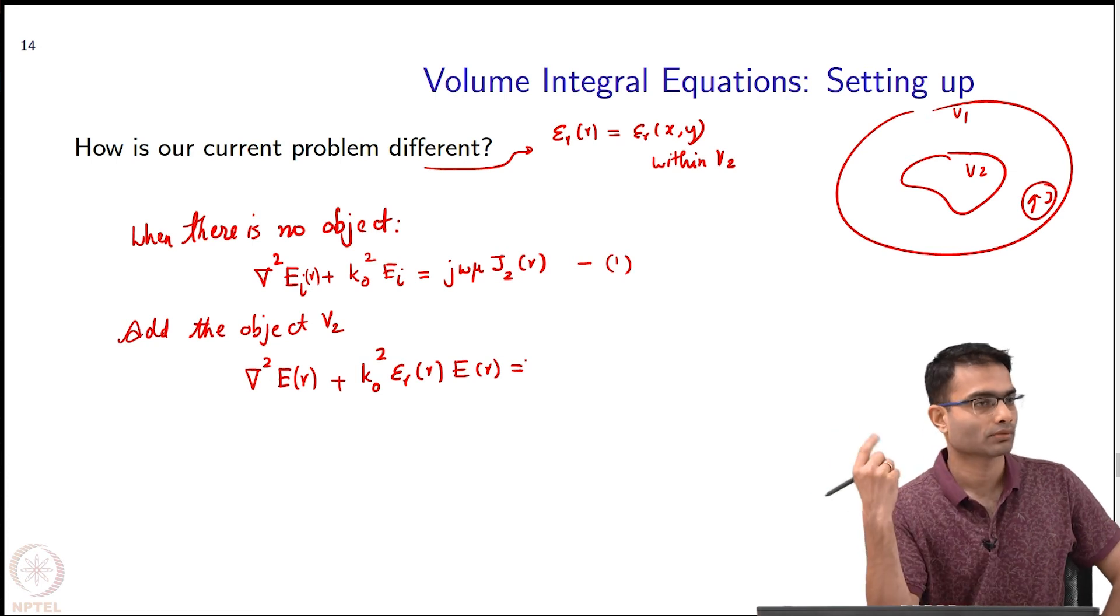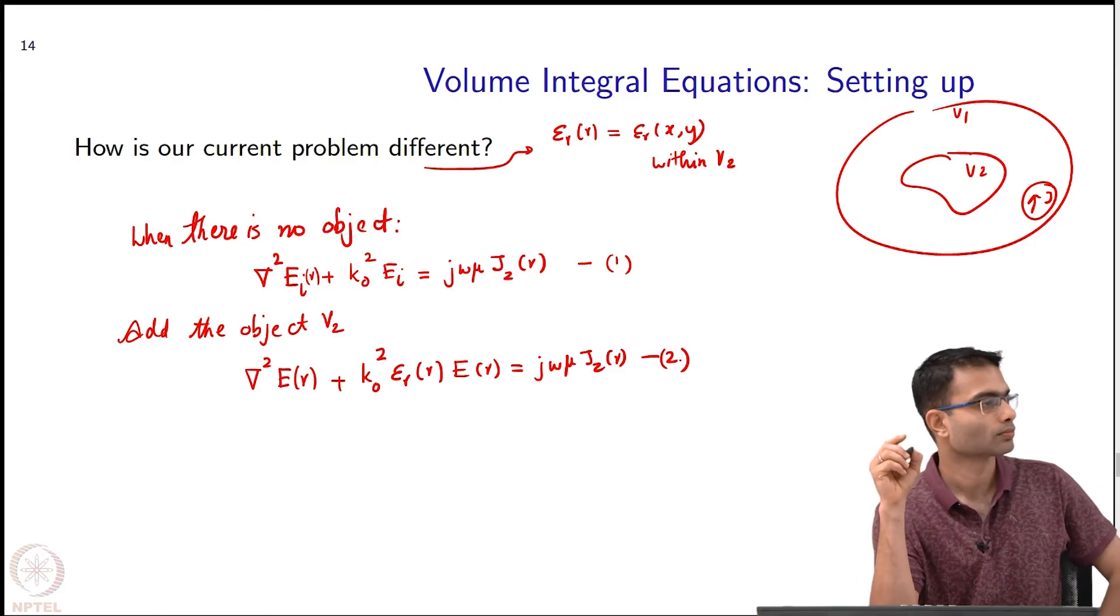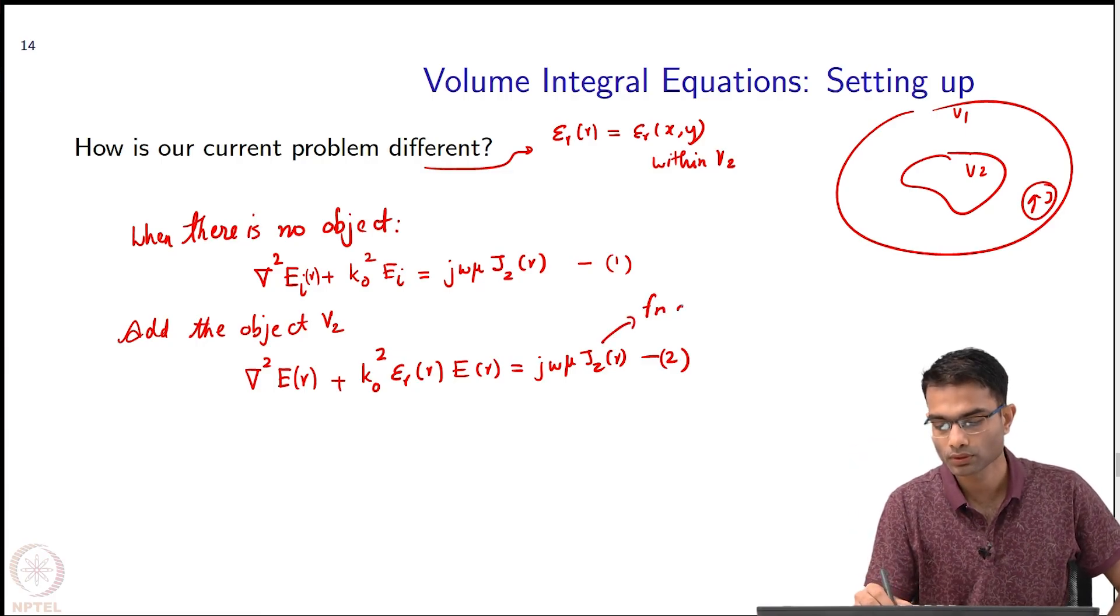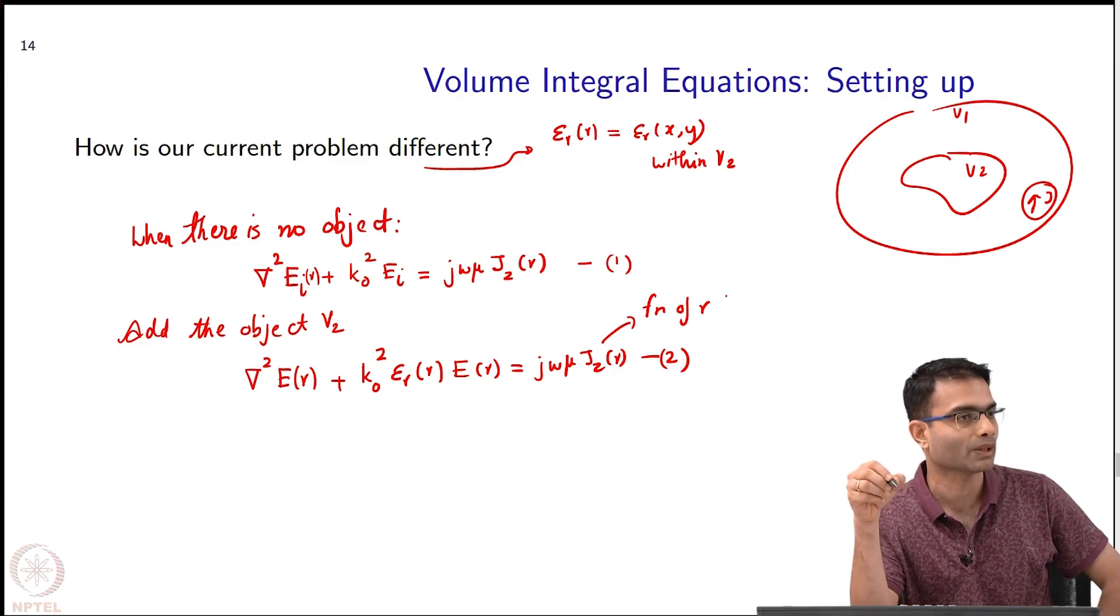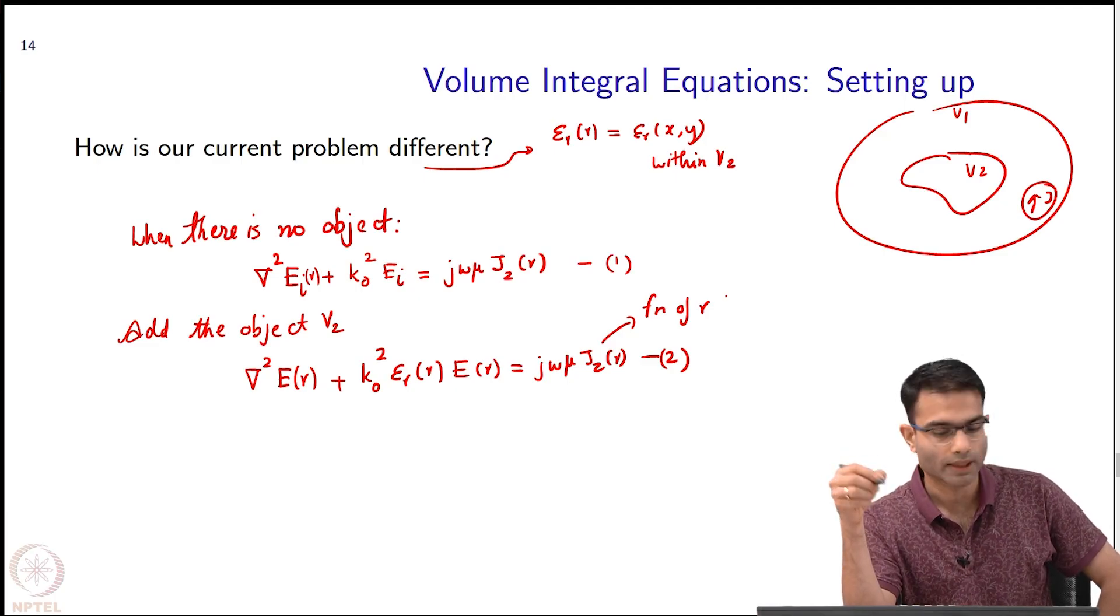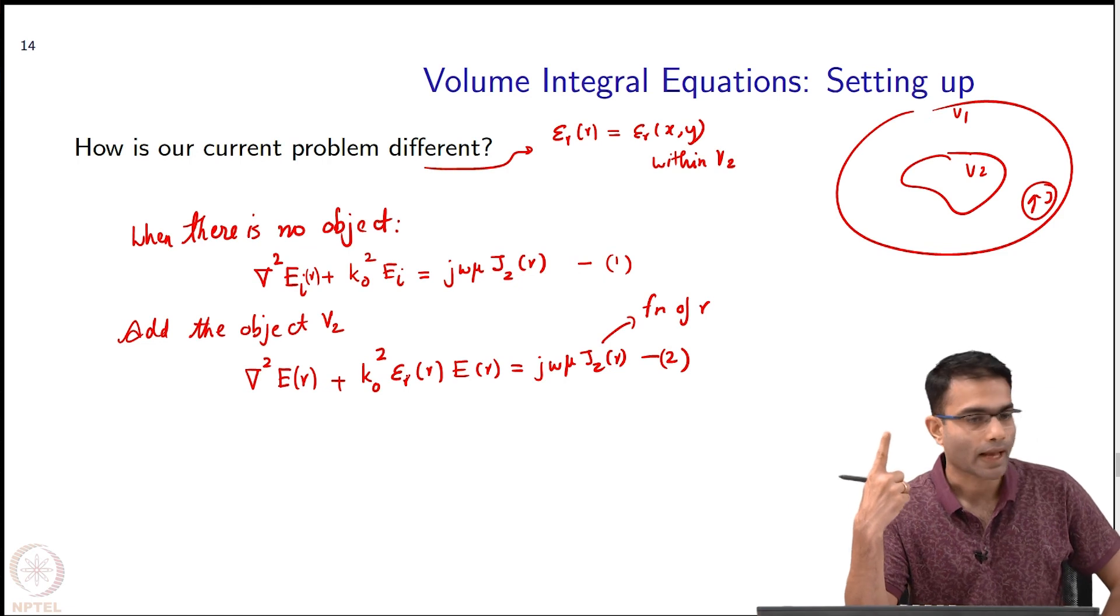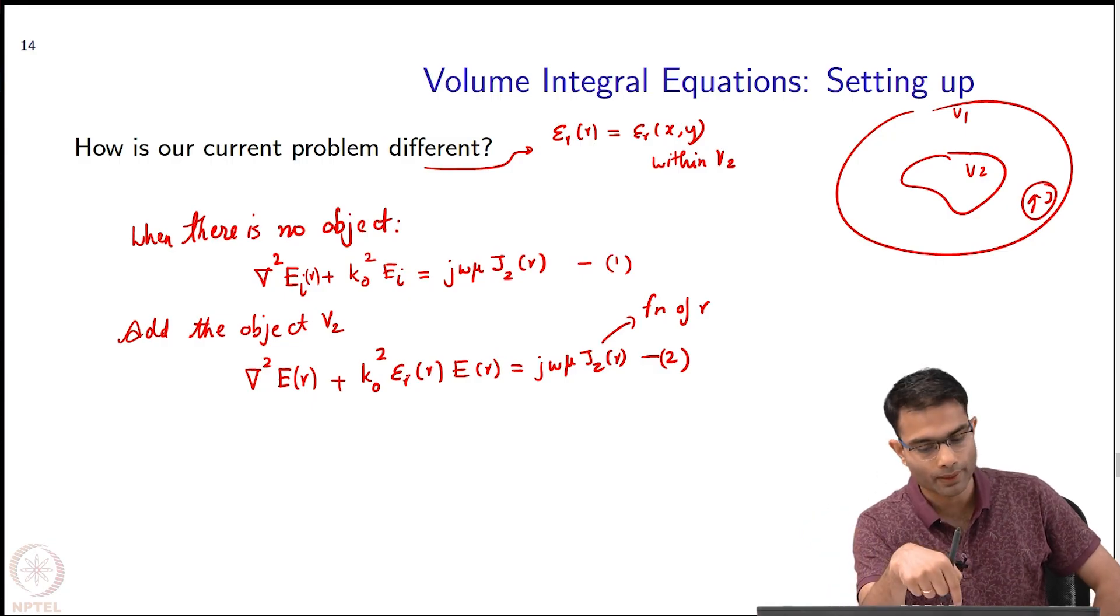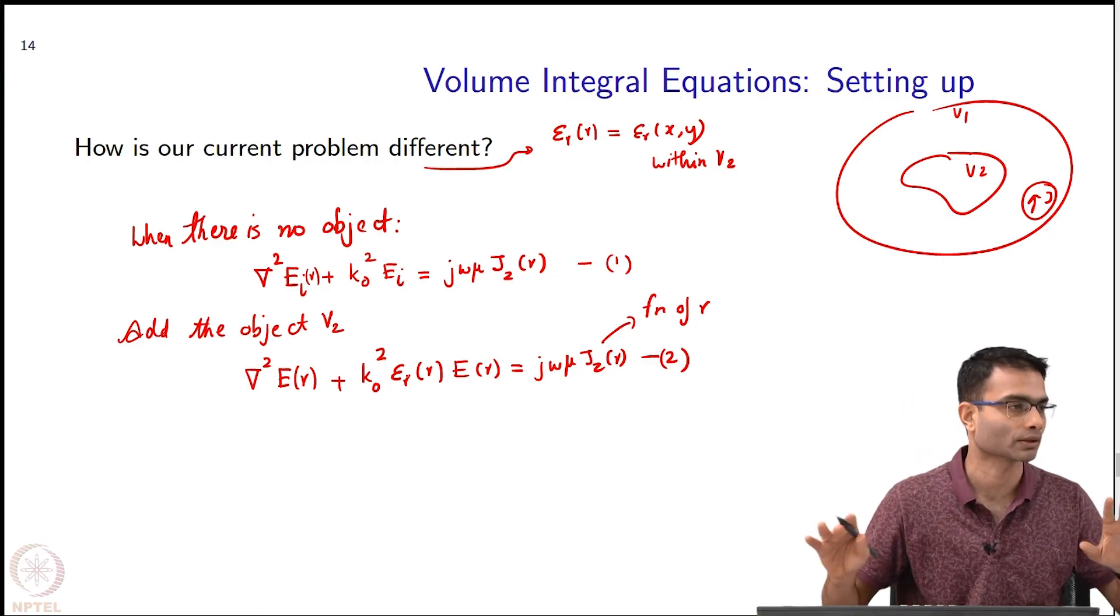What about the right hand side, does it change? No, the current source is still there. In V2 it is 0 current source. Even this j is a function of r. In V2 the current source is 0. Wherever you are asked to evaluate this, take a value of r. Let us say r is in V1, then what will happen? Then the relative permittivity will be 1, that relative permittivity of vacuum is 1 and current source is present. Evaluate, take r inside V2, what will happen? I will have a relative permittivity to be different from 1 and current source will be 0.